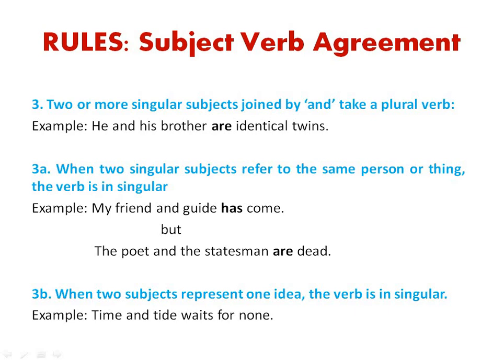The next rule says when two subjects represent one idea, the verb is again singular. Unlike the previous case where two subjects referred to the same person, here the two subjects refer to the same idea. For example, 'time and tide waits for none' — time and tide represent the same idea, so we use the singular form of the verb 'waits.'